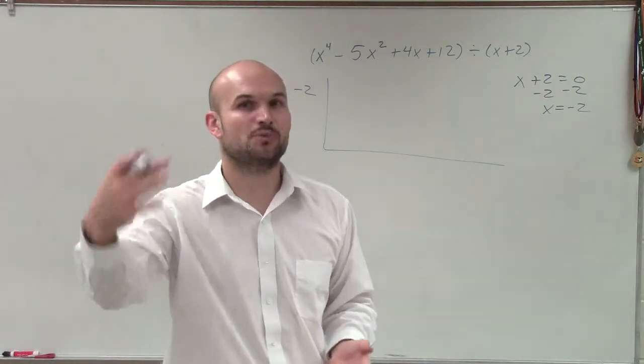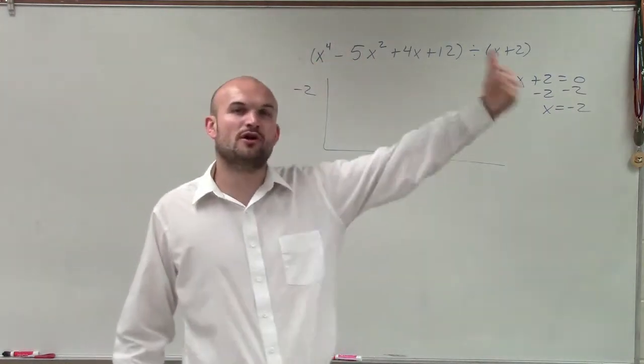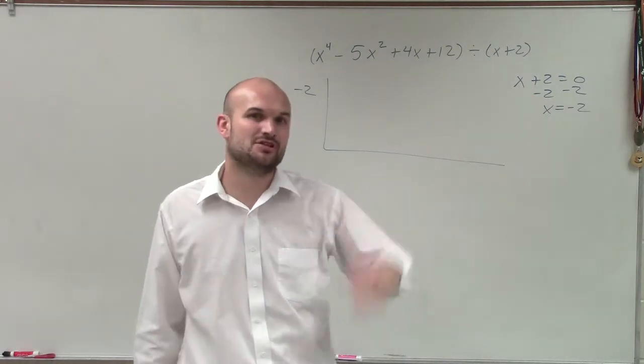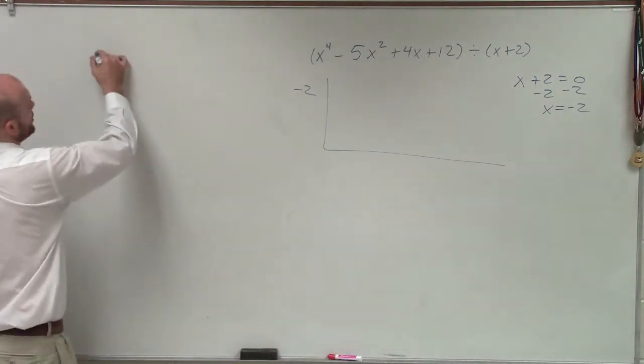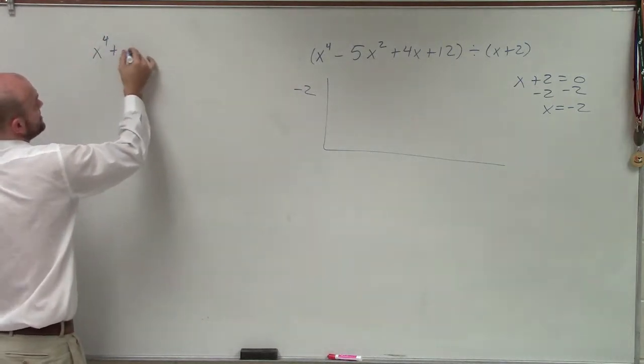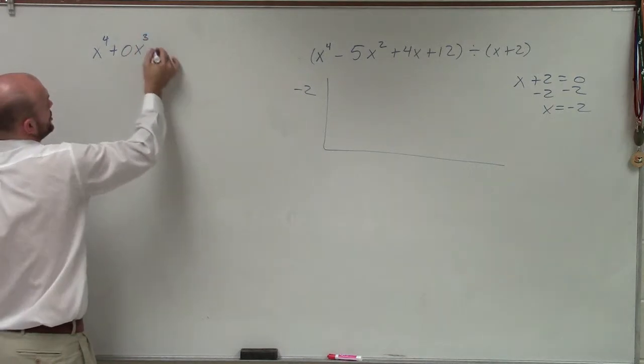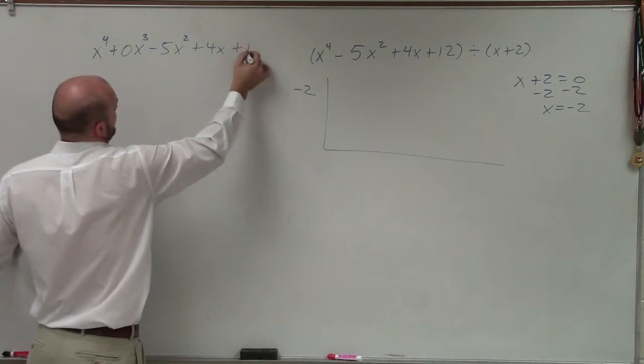Now remember I said each one of our terms, not just the terms that are visible, because if I'm missing a term in my descending order of a polynomial, I have to make sure I include that coefficient. So if we were going to go in order, I would have x to the 4th plus 0x cubed minus 5x squared plus 4x plus 12.